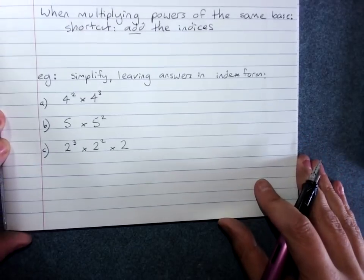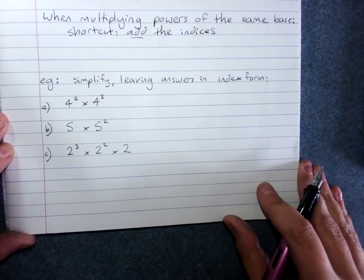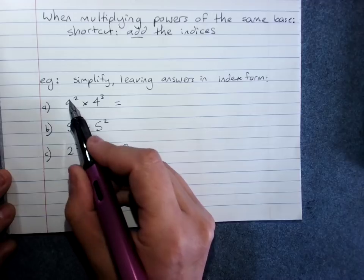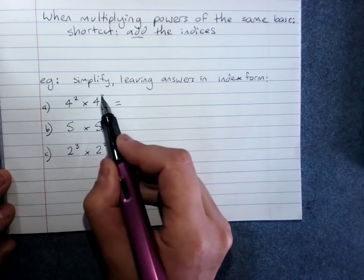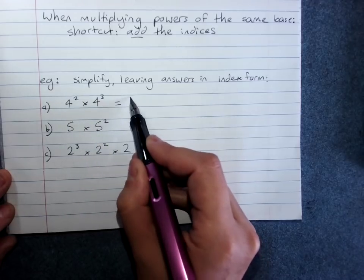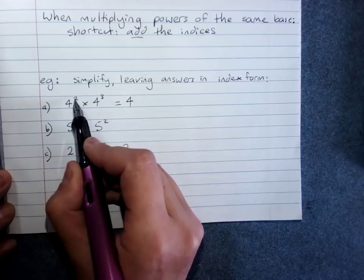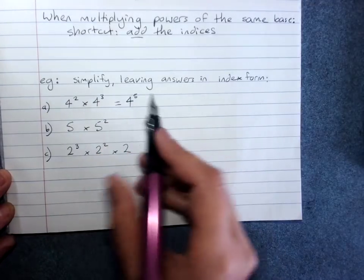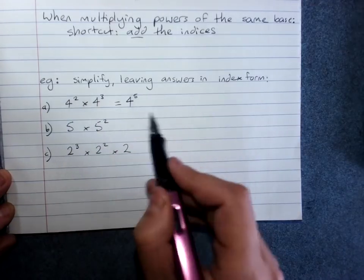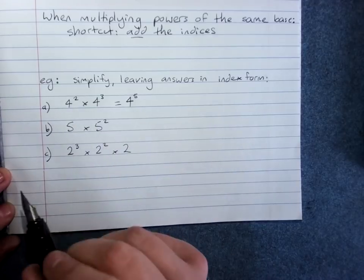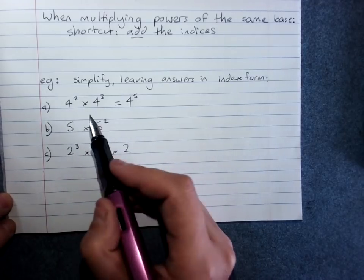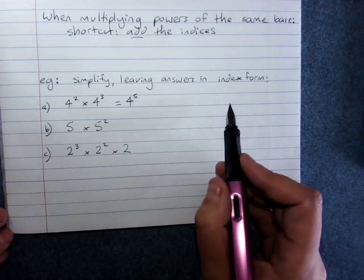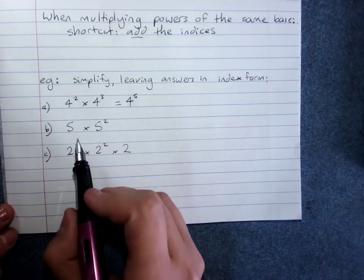So when asked to simplify these, leaving the answers in index form: 4 squared times 4 cubed is 4, and the powers get added, giving 4 to the power of 5. If I got stuck, I could have expanded that all out to work it out. So there's the way of working out by expanding, or there's the shortcut, which is the index laws.